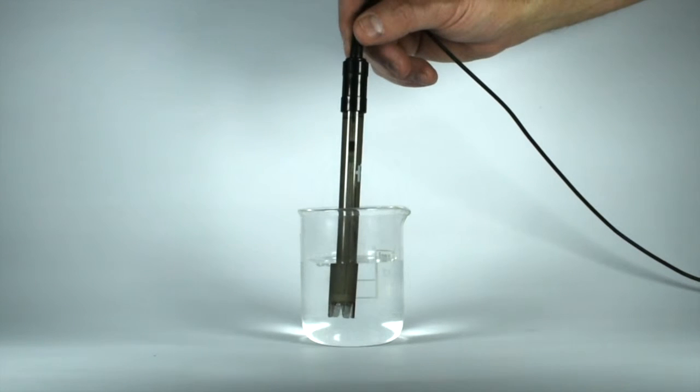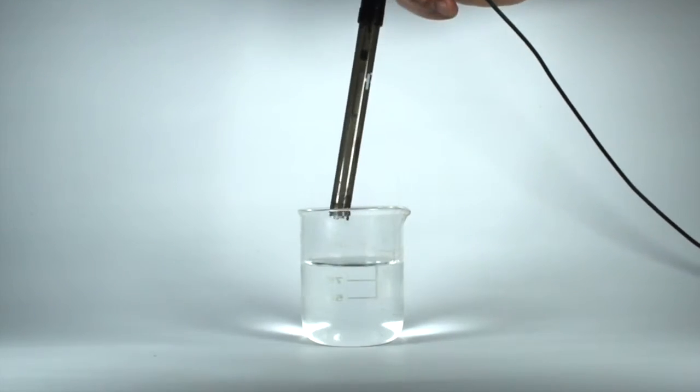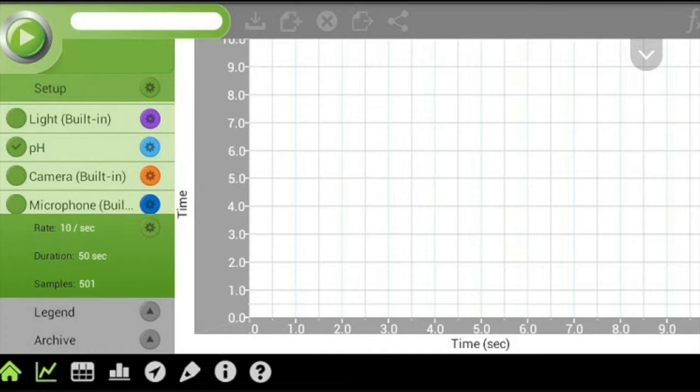To take a measurement, insert the electrode into a sample. Then select Run.